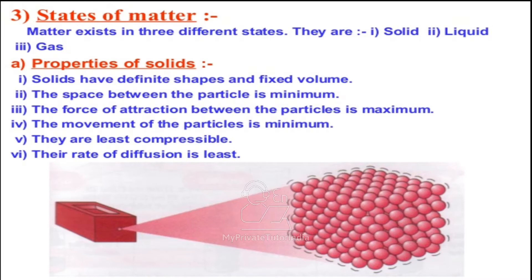First of all we will start with the properties of solid. The first property of solid is that solids have definite shapes and they have fixed volume. Second, the space between the particles is minimum. As we know that matter is made up of different particles, and there is some intermolecular spacing, and these intermolecular spaces are the most minimum.